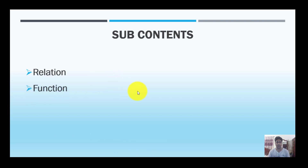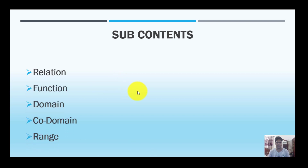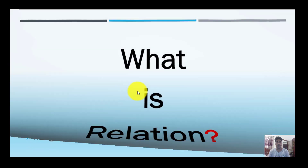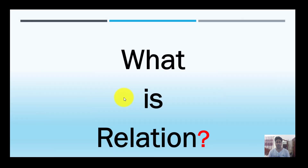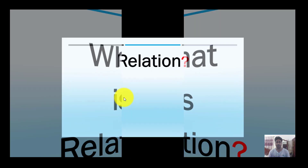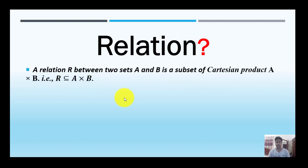We will cover Function, Domain, Co-Domain, and Range. First: what is a Relation? A relation R between two sets A and B is a subset of the Cartesian product A cross B.